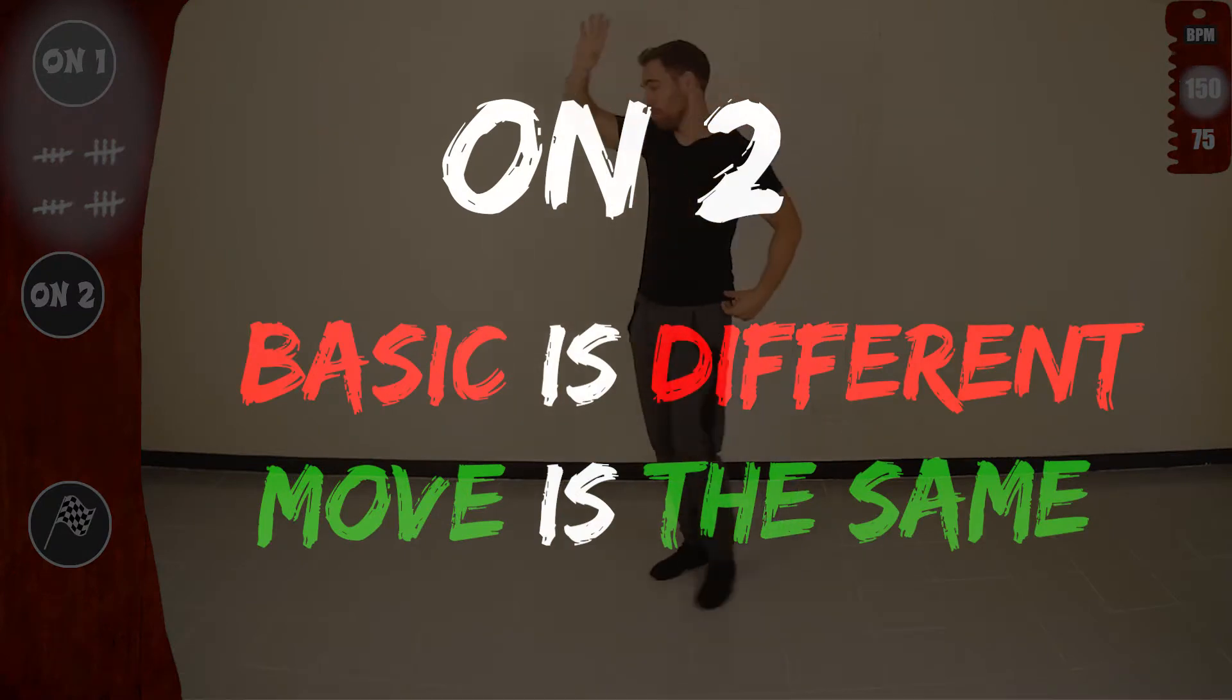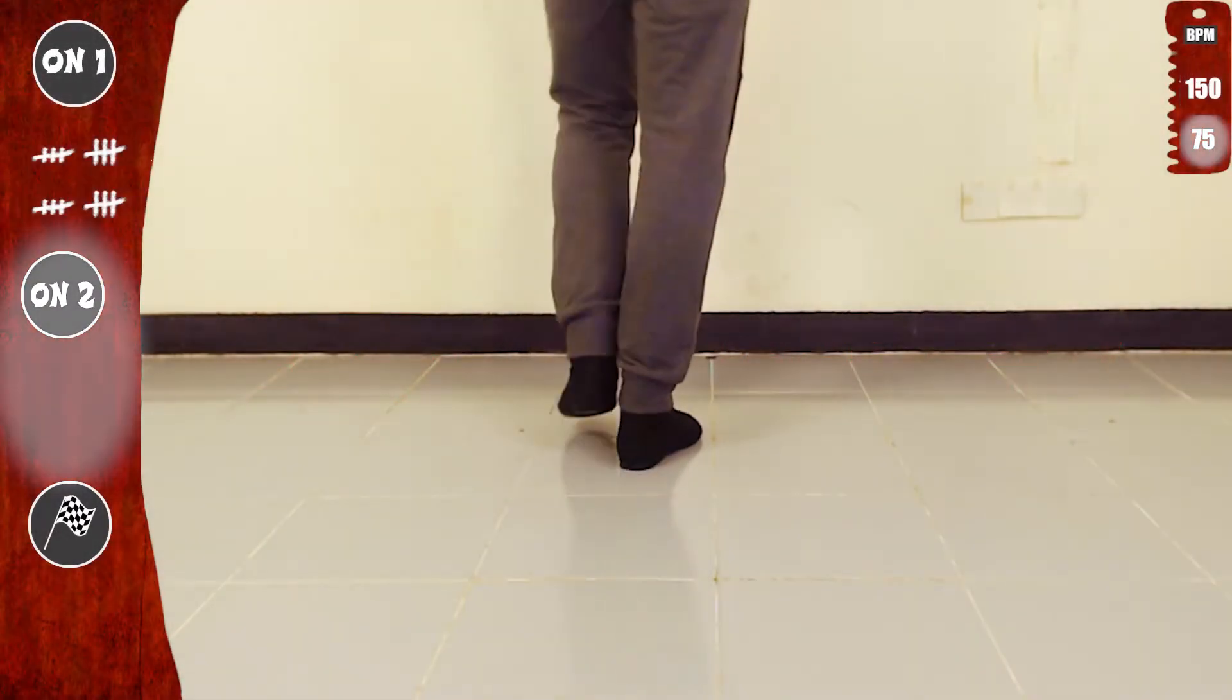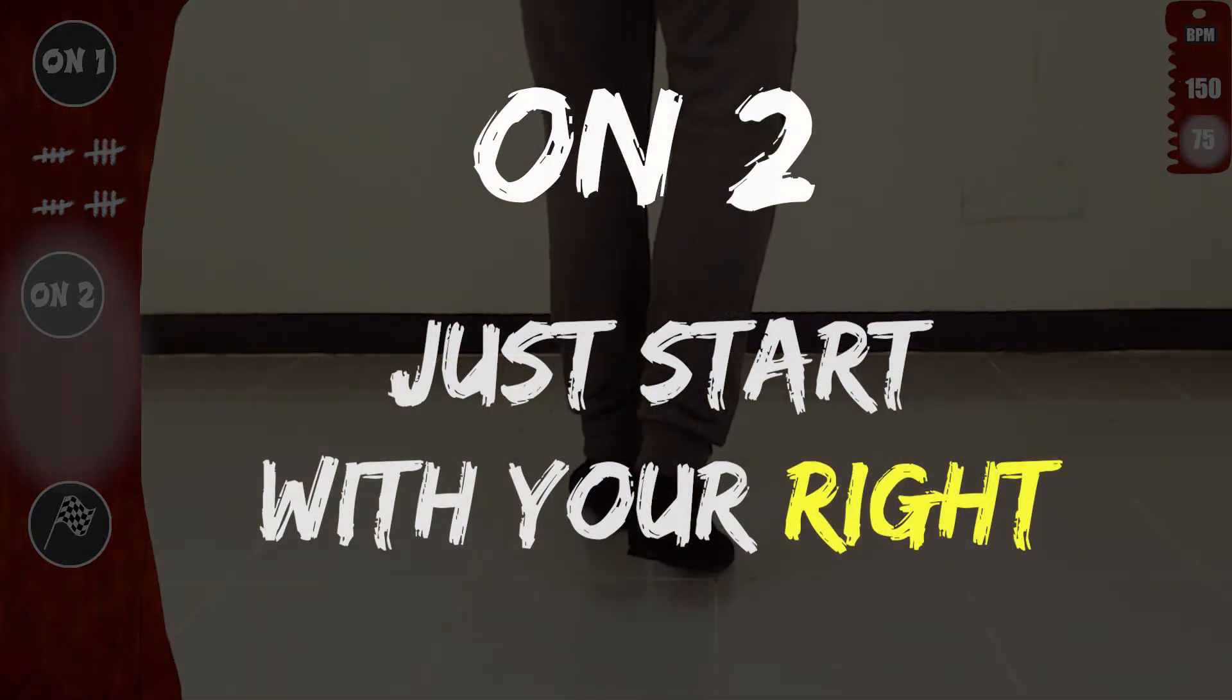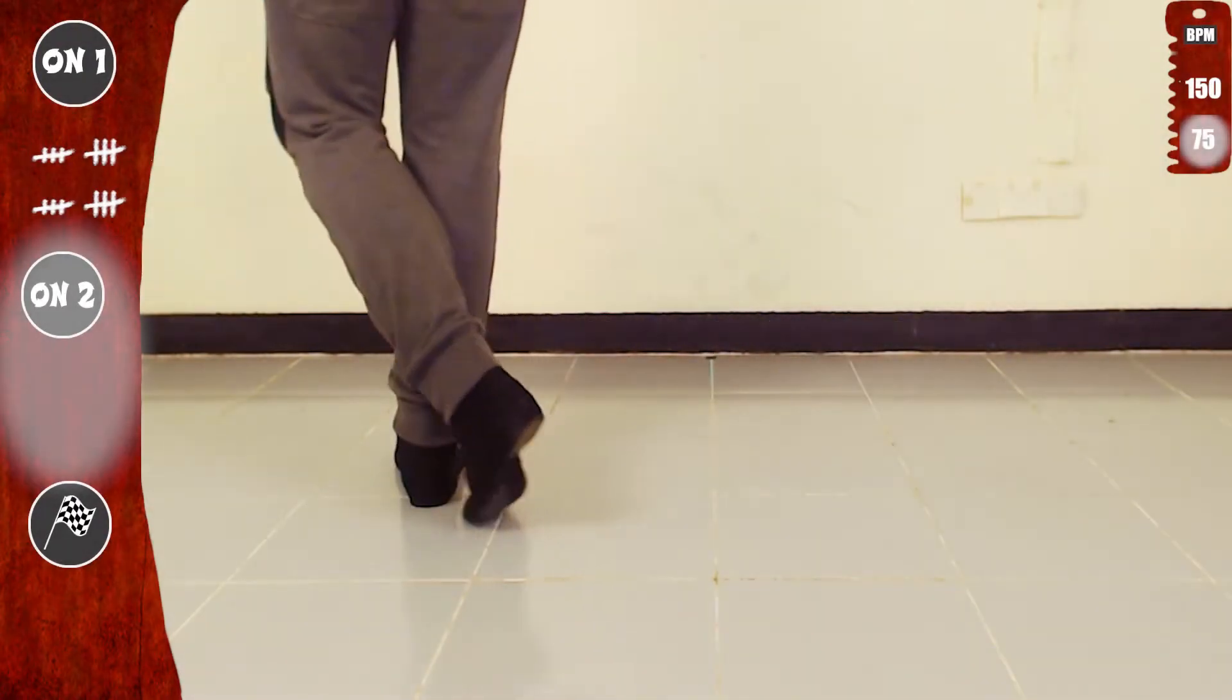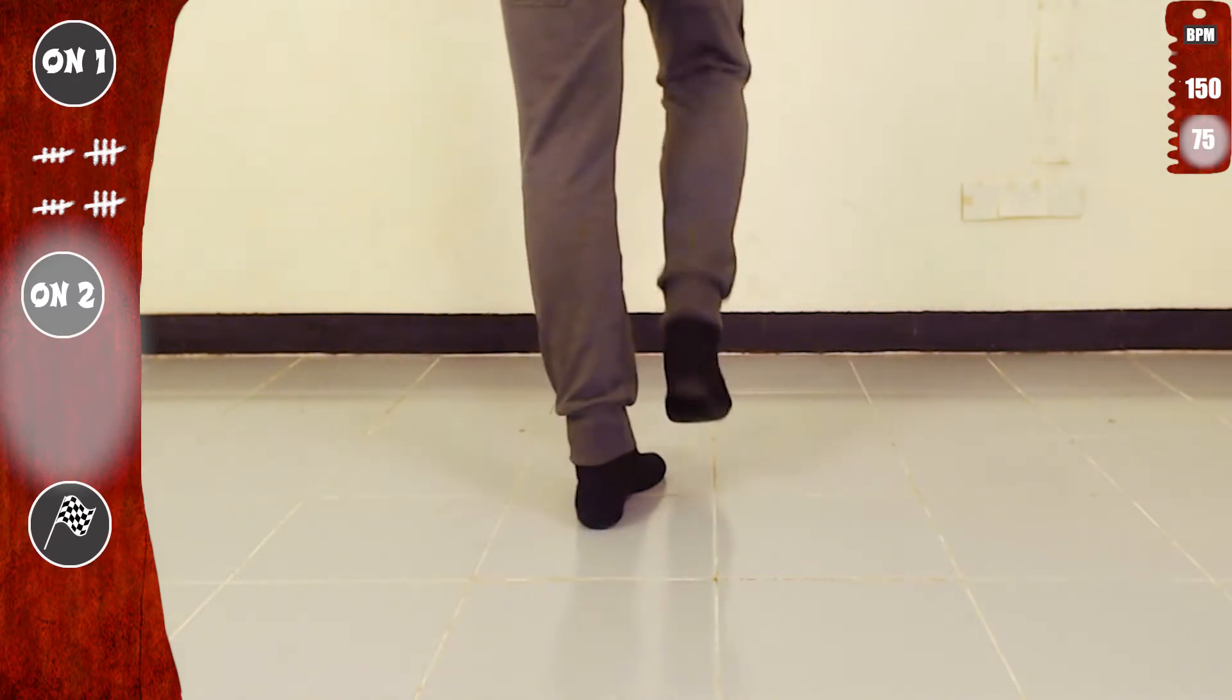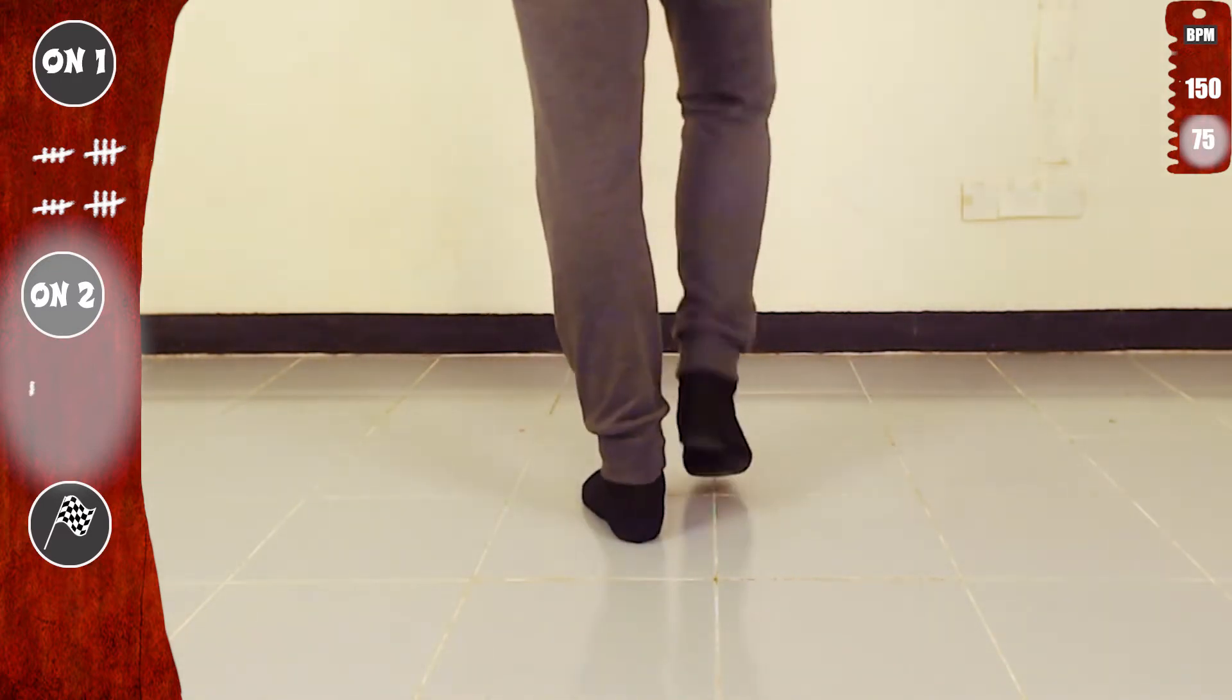Let's do it on two. Basic is different, but the move is the same. Just start with your right instead of your left. Let's go. Cross, step, cross. It's the same. Cross, step, cross. Basic on two. One. It's the same move, just right and then left.